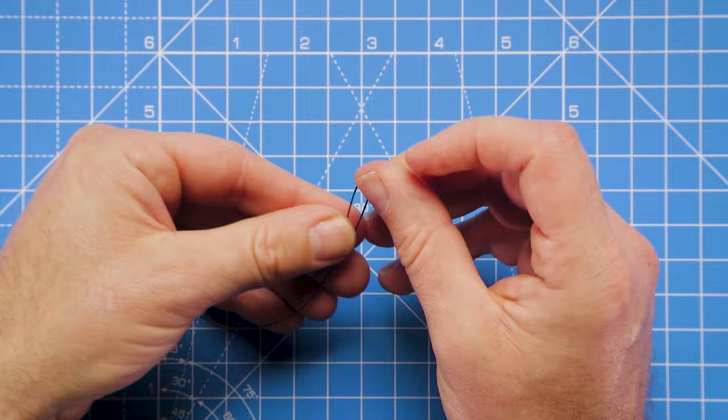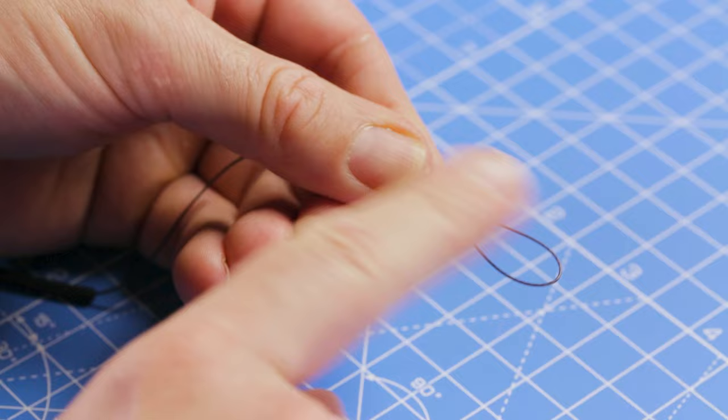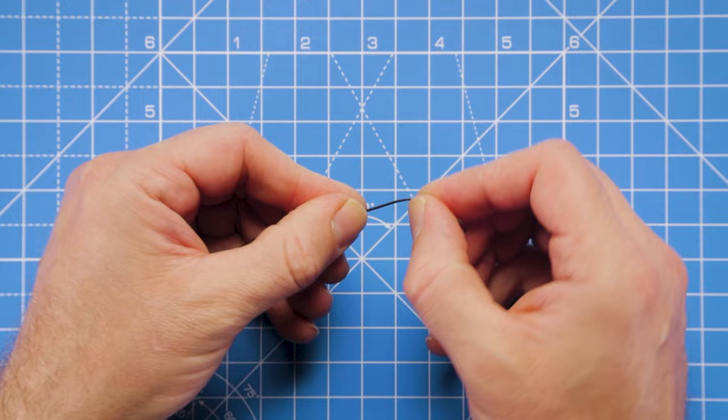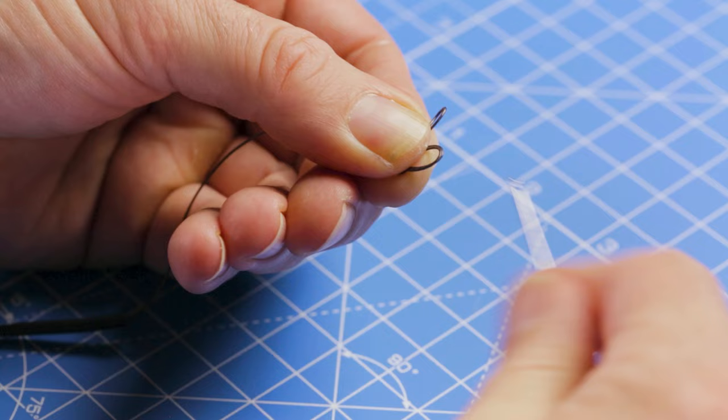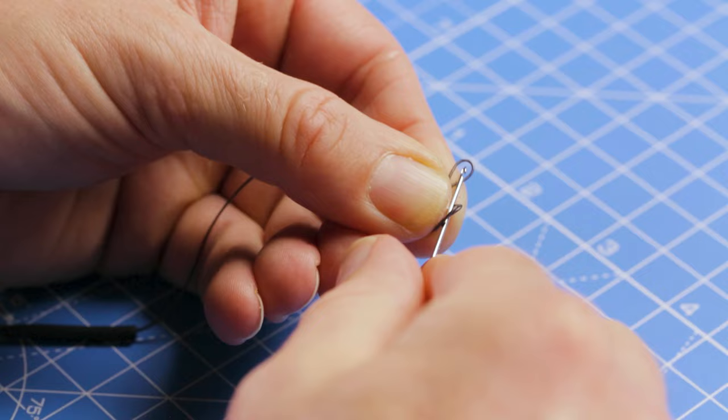So now I'm going to create a figure-of-eight loop knot at the end of the hook link so that we can attach it to our terminal tackle. So make one big loop like so, and then just fold that back over itself to create a second loop. Then take your first loop behind that second loop like so. It can be a little bit fiddly, so I like to take my baiting needle and pass that through the second loop to pull the first loop back through.